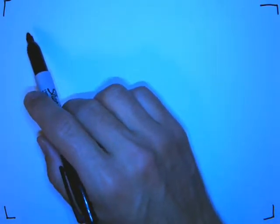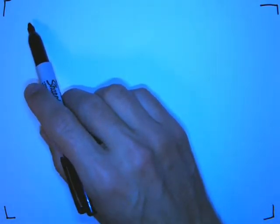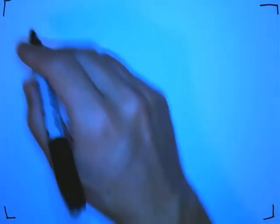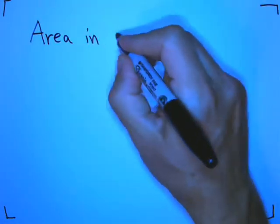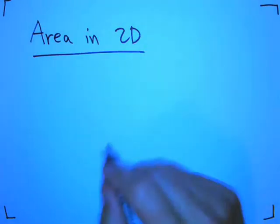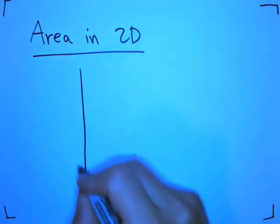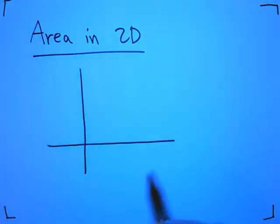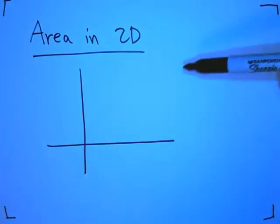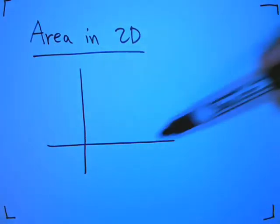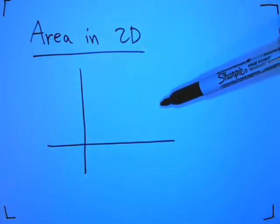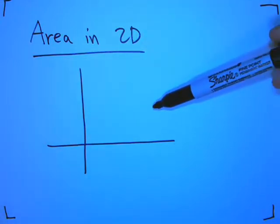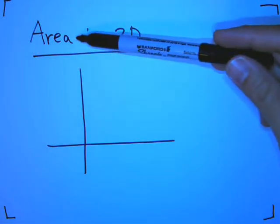And we're going to come back to this when we study determinants for real in the linear algebra context. But I want to start with area in two dimensions. And I want to think about what are the simple objects, the simple geometric objects we can describe using vectors. The whole name of the game is what can we do with vector algebra to answer geometry questions.